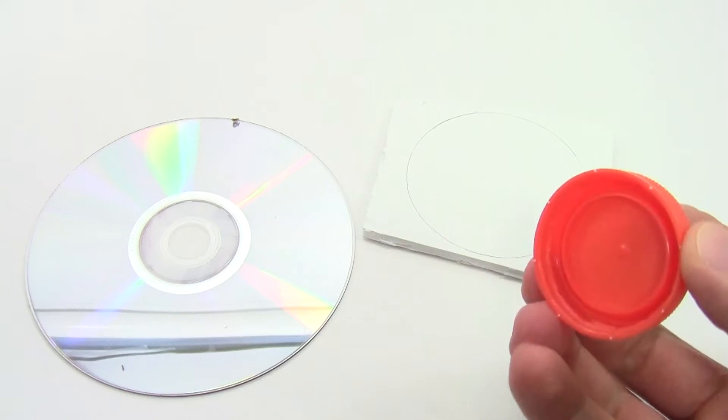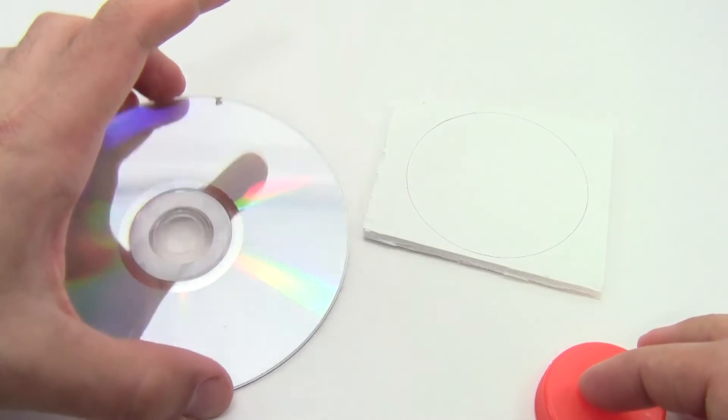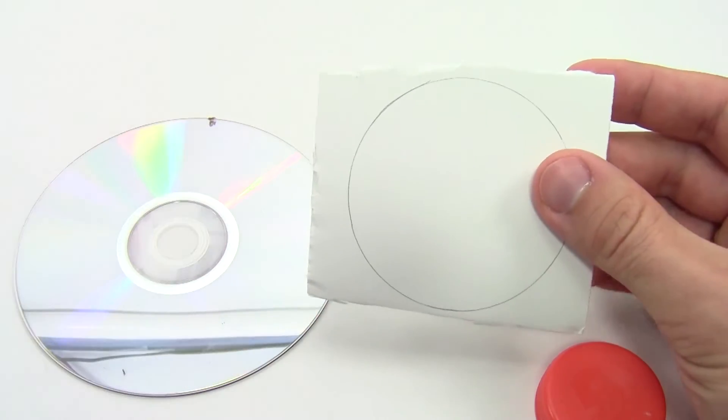For the wheels, you can use round objects like plastic bottle caps or CDs. You can also cut your own wheels from material like foam board.